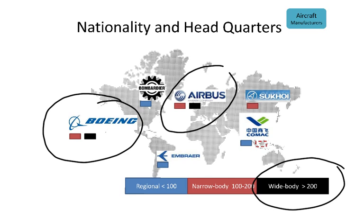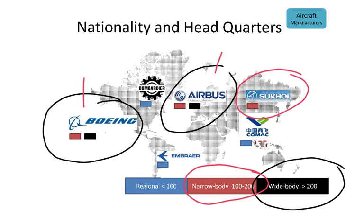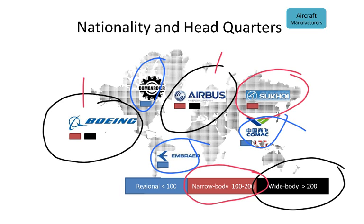Almost the same for narrow body, which again is Airbus and Boeing, but there is one new one — Russian Sukhoi — who is producing a narrow body aircraft. When we look at regionals, we have Bombardier, we have Embraer in Brazil, and we have Comac in China producing regional aircraft. As we can see, there are just a few manufacturers because it is a very complex and sophisticated business, so it is not easy to start a plane company.